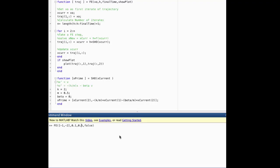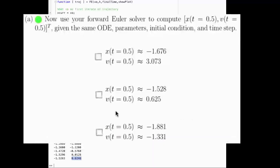and in this case we will not plot the final trajectory, we get that the last point in the trajectory, or the trajectory at time 0.5 using this solver, is position negative 1.5283, and velocity 0.6246. That is the answer to question 1a.